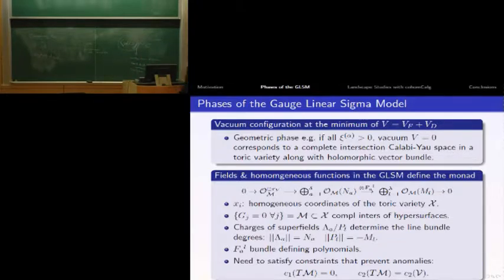There are conditions in the geometric phase. To prevent anomalies, you have to make sure the first Chern class of your tangent bundle vanishes, making your sub-variety a Calabi-Yau space. The second condition constrains your bundle to have the same second Chern class as the tangent bundle.